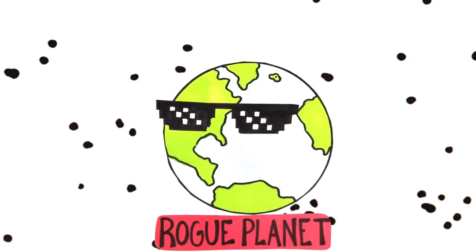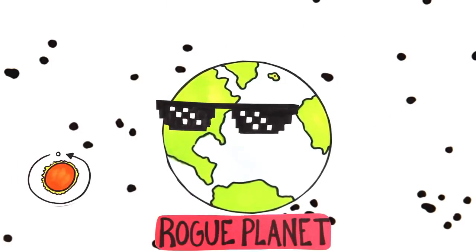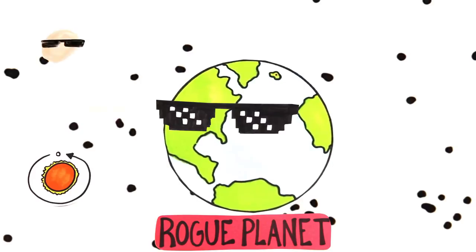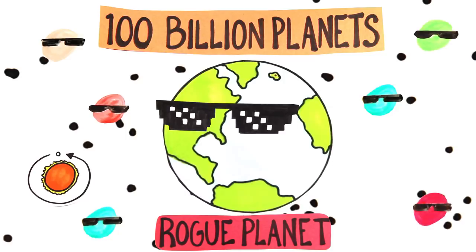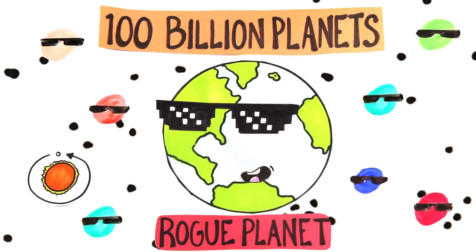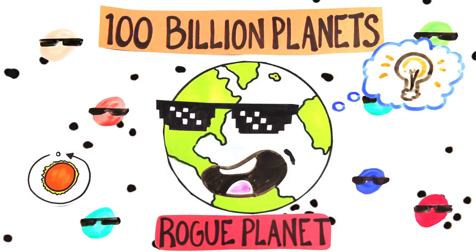Though most planets are tethered to the star that created them, studies estimate that within the Milky Way, there are 100 billion planets that wander the galaxy as rogue planets. Whichever the case for Earth, we'd require a lot of human innovation to survive.